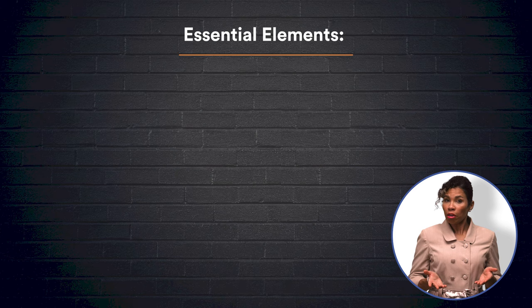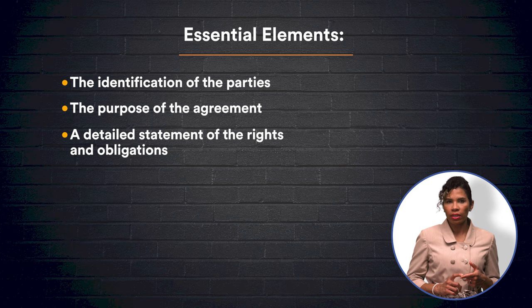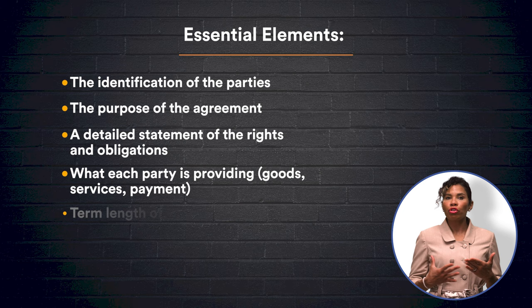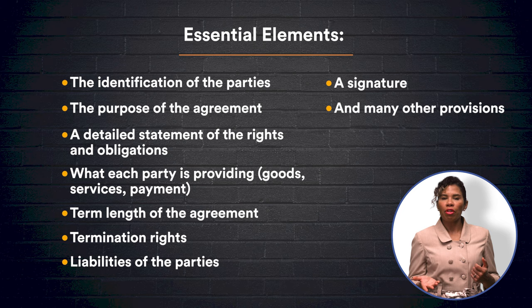These elements are the identification of the parties, the purpose of the agreement, a detailed statement of the rights and obligations of each party, what each party is providing in exchange for what they are receiving — including the term length of the agreement — termination rights, liabilities of the parties if they have a dispute, a signature, and many other provisions.